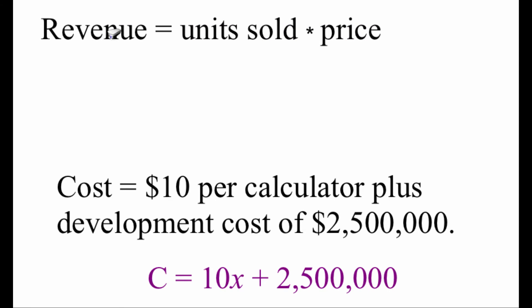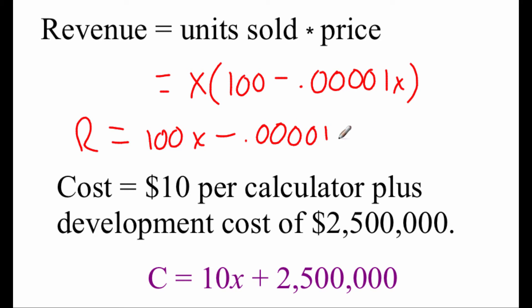Now, to figure out how much revenue we're bringing in, what we need to do is we need to take the number of units sold times the price. Well, on the last page, we said that we were going to use the variable X to represent the number of units sold, and we had a price function on the last page. It was that 100 minus .00001X. So really, our revenue function R is going to be 100X minus .00001X squared, if we take that X and distribute it through.